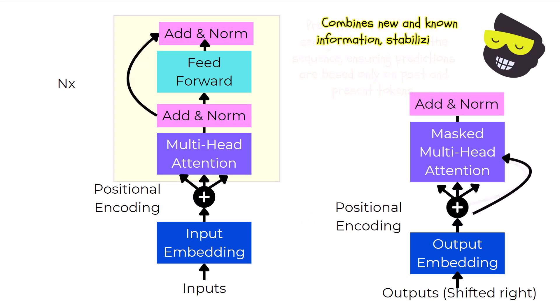Just like in the encoder, the decoder has add and norm layers. They help the model combine the new information with what it already knows, keeping the data consistent and well scaled.